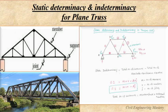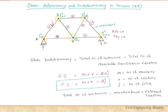Hello everyone, welcome to Civil Engineering Mastery. Today we shall discuss static determinacy and static indeterminacy for plane trusses. Here is a simple truss with a roller support at one end and a hinged support at the other end. This truss has seven members and five joints. This is the basic assembly of a truss.